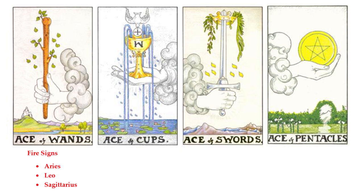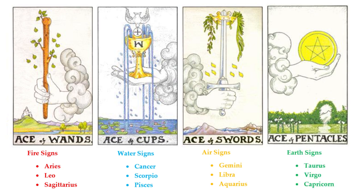Wands correspond to the fire signs — Aries, Leo, and Sagittarius. Cups correspond to the water signs — Cancer, Scorpio, and Pisces. Swords are the air signs — Gemini, Libra, and Aquarius. And Pentacles are the earth signs — Taurus, Virgo, and Capricorn.